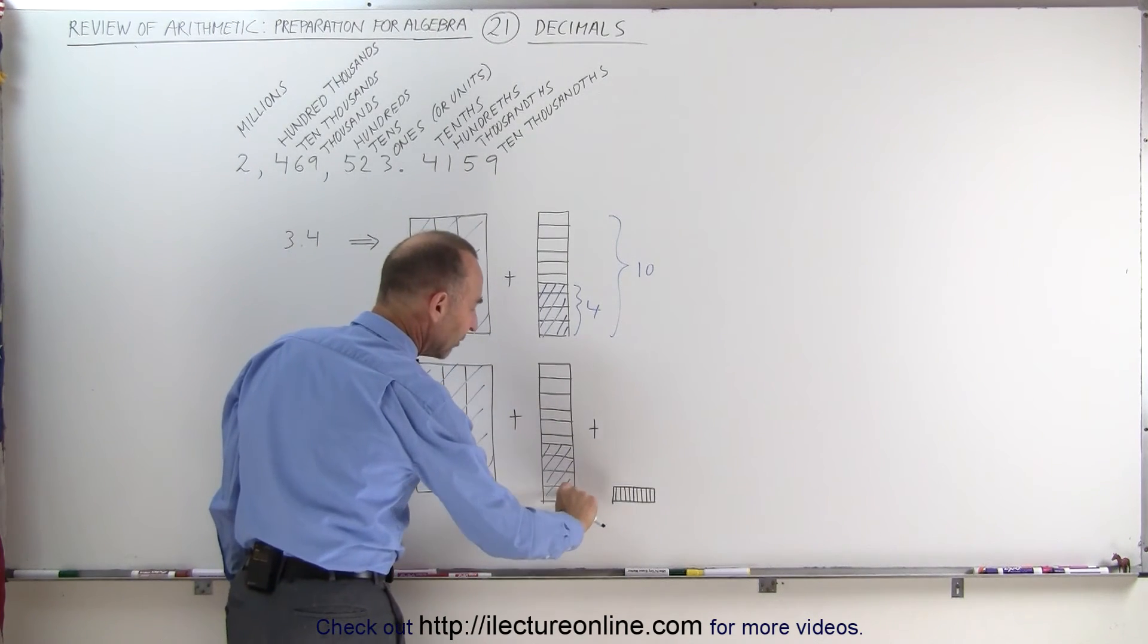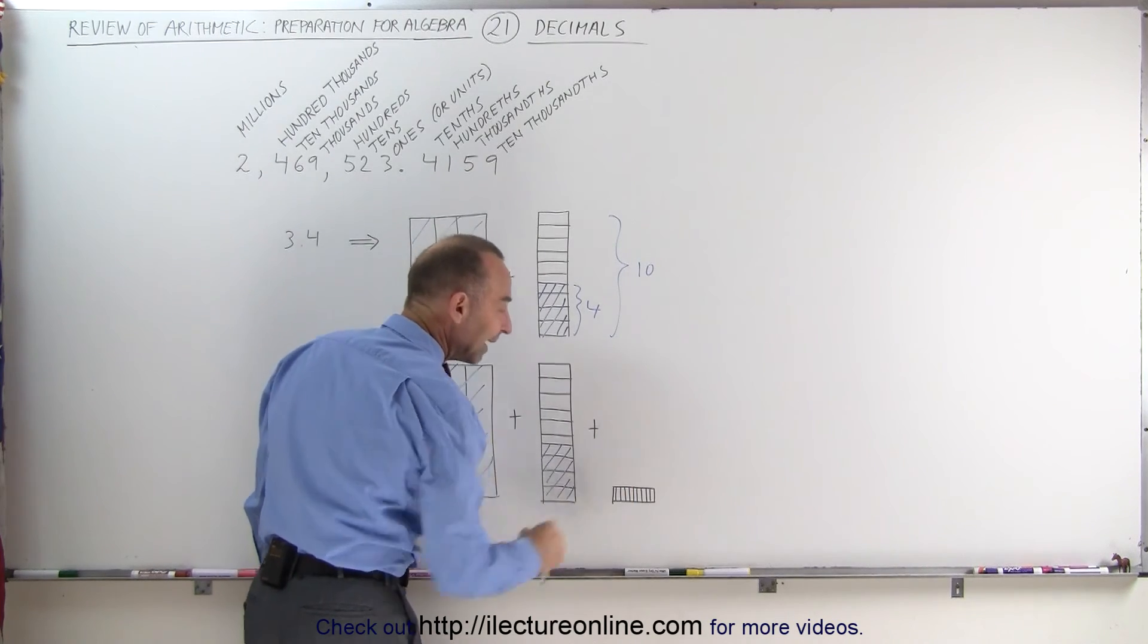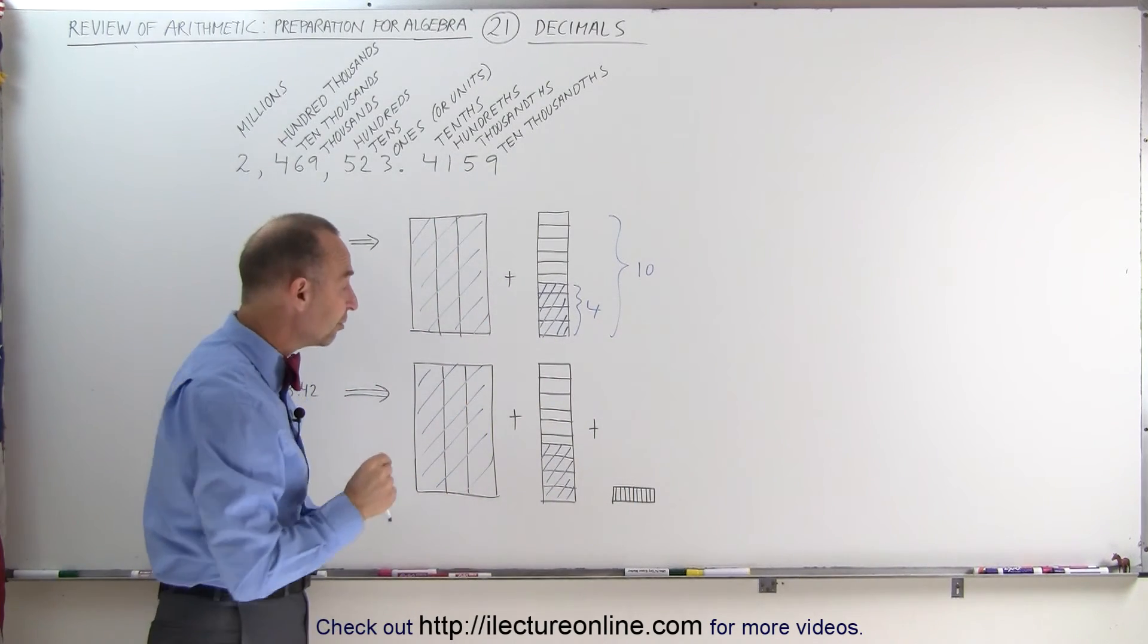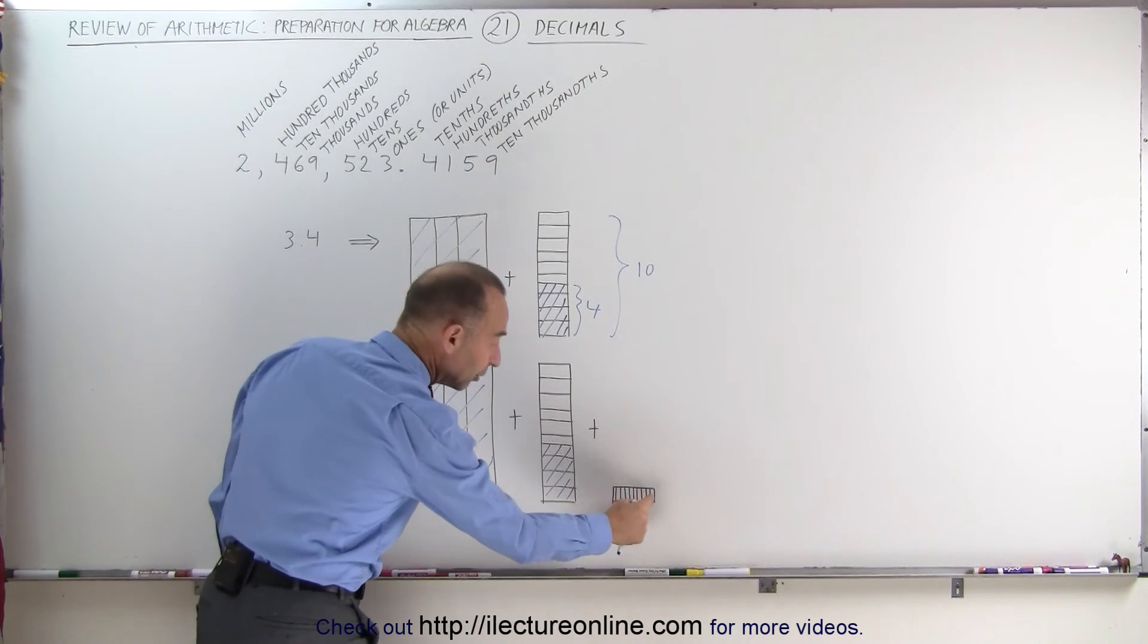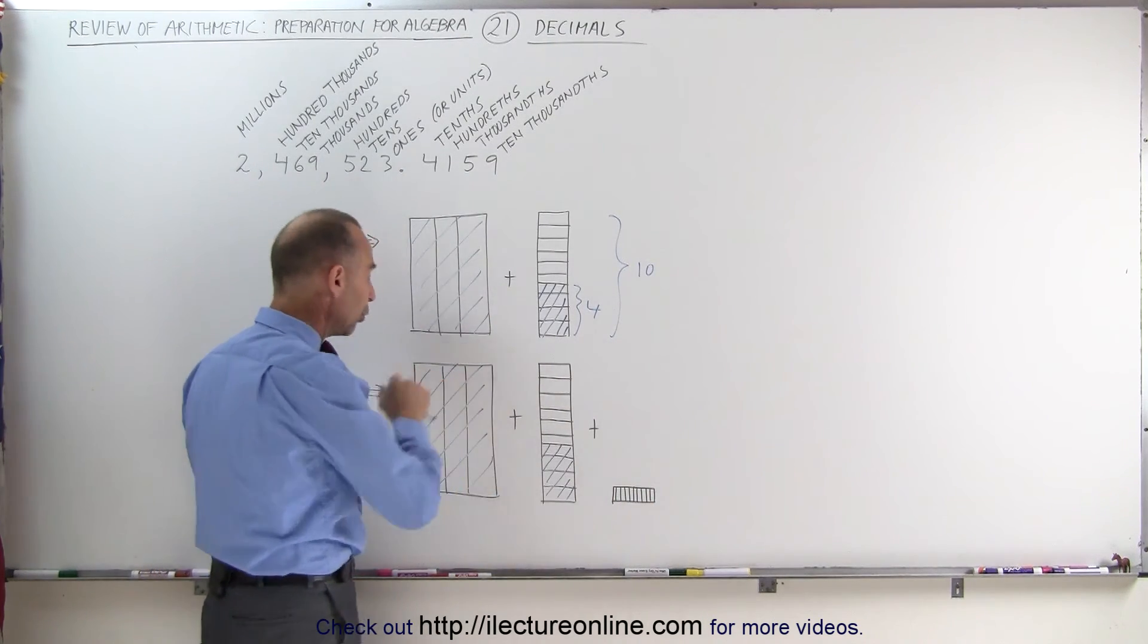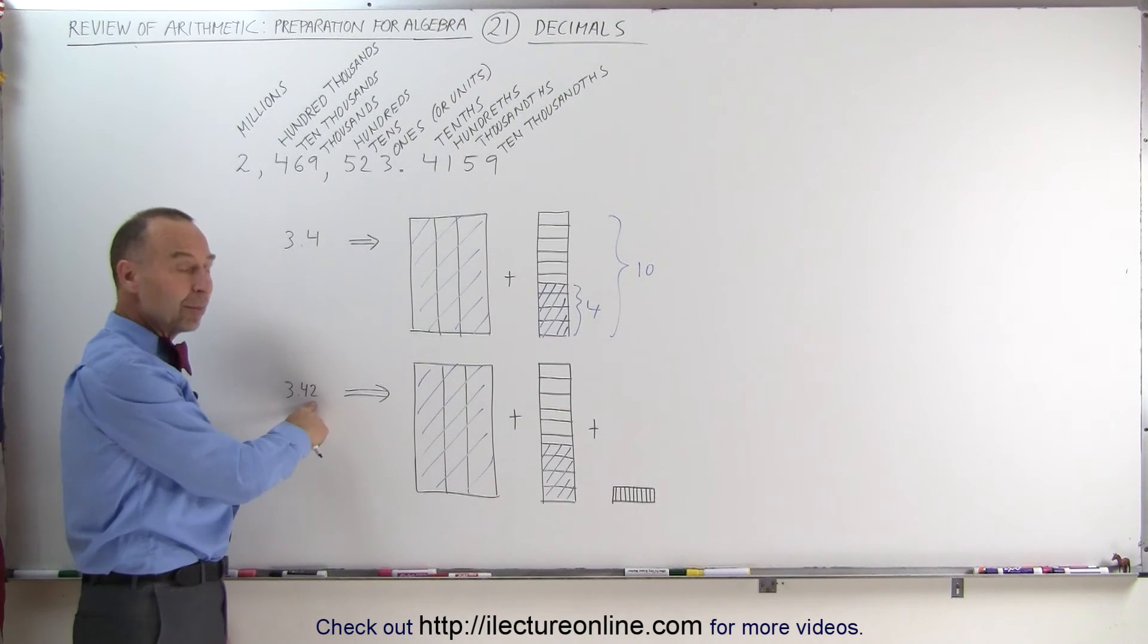Notice, if you take one-tenth and you divide it into 10 equal pieces, each of those little pieces represents 1 one-hundredth of a whole unit. You would need 100 of those little pieces to make up a whole unit. That's what the second decimal place represents.